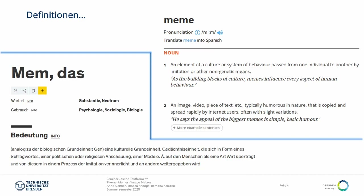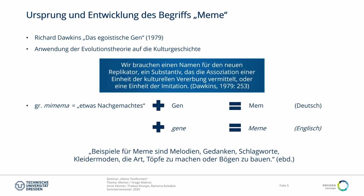Und doch gibt es eine Schnittmenge zwischen beiden Bedeutungen und die hängen miteinander zusammen. Denn die erste Bedeutung und das, was im Duden vermerkt ist, geht zurück auf Richard Dawkins, einen Evolutionsbiologen. Der hat diesen Begriff geprägt in seinem Buch 'Das egoistische Gen' von 1976, weil er nach einem Wort suchte, das zum Ausdruck bringt, wie kulturelle Merkmale von Menschen zu Menschen und über Generationen weitergegeben werden. Er versuchte also, die Evolutionstheorie auch auf die Kulturgeschichte anzuwenden.